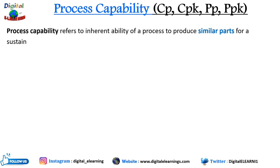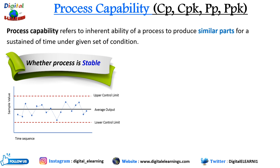Process capability refers to the inherent ability of a process to produce similar parts for a sustained period of time under a given set of conditions. Before determining process capability, we need to make sure the process is stable — meaning the variations observed are only due to common causes, no special causes exist, and the process is predictable and consistent over time. If the process is unstable, it might exhibit certain shifts.